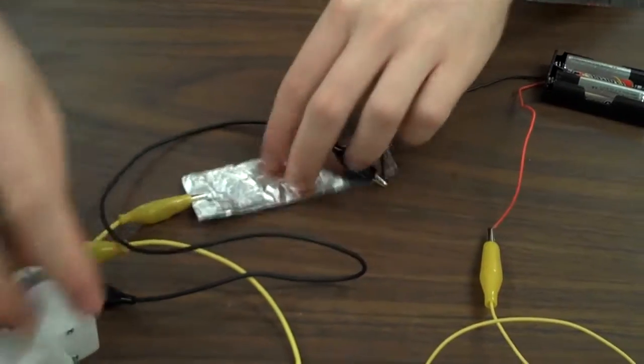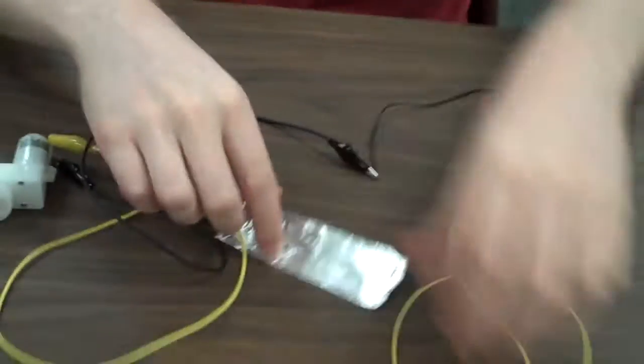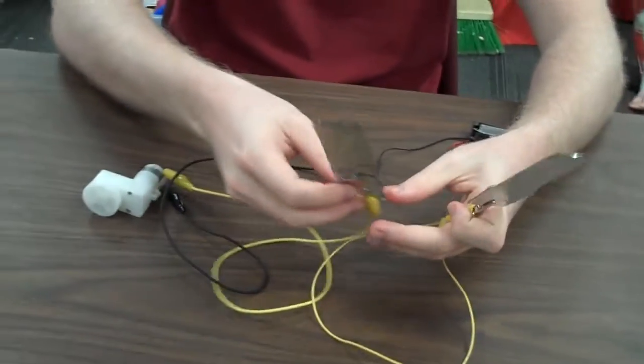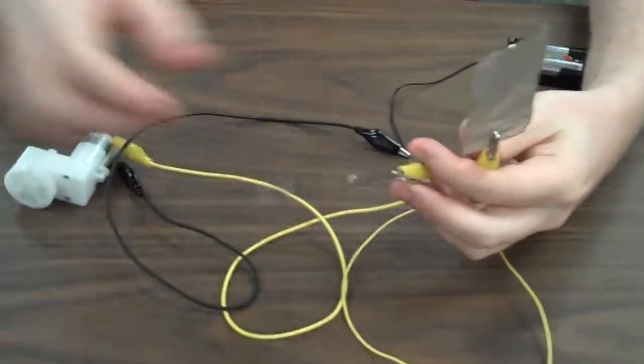So right now the circuit is still an open circuit. In order to close it, all you have to do is touch the two pieces of tin foil together to create your poor man switch.